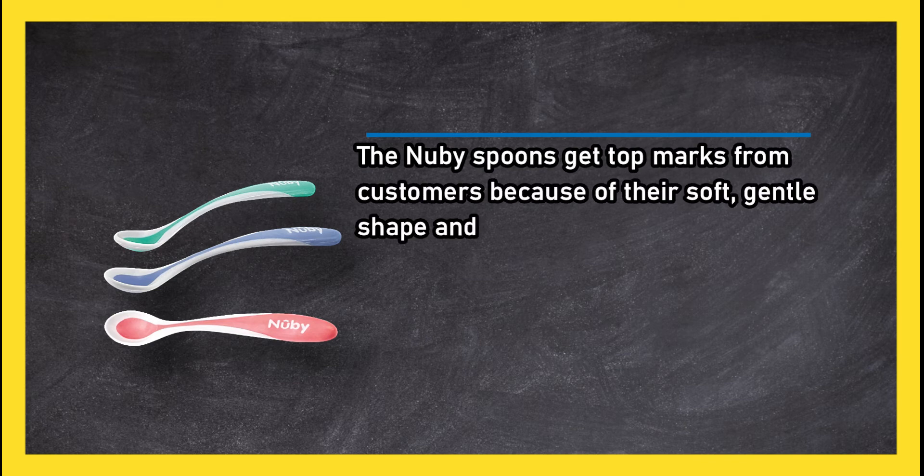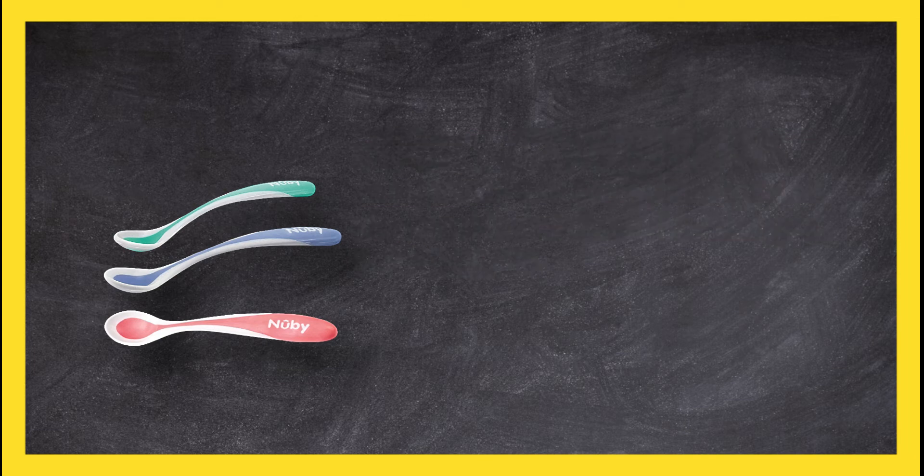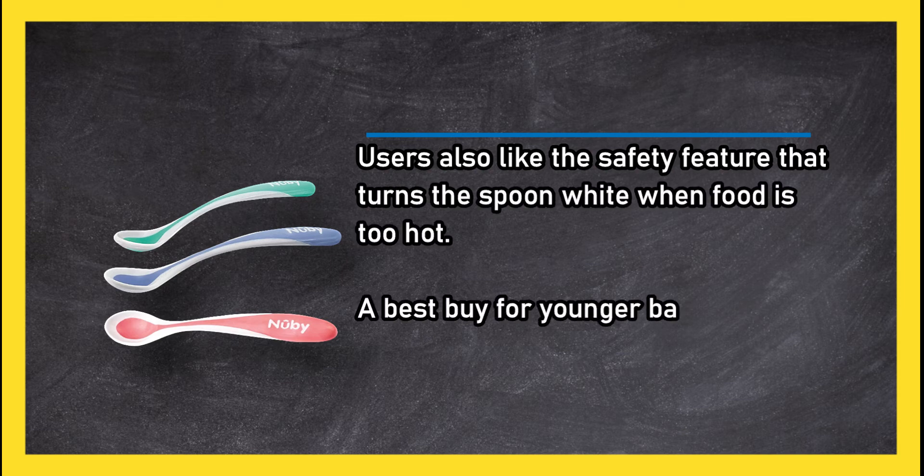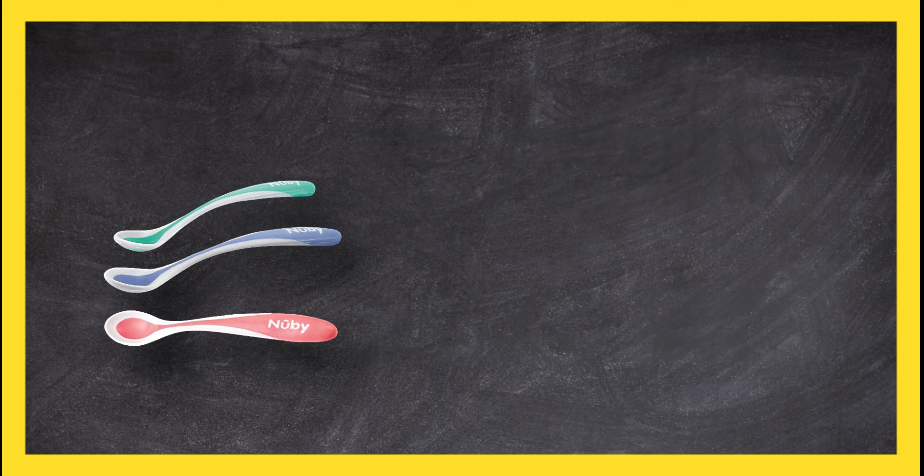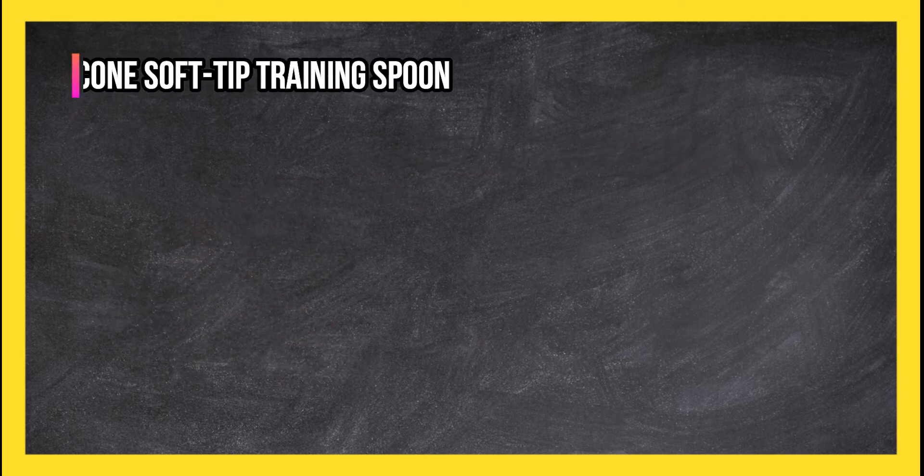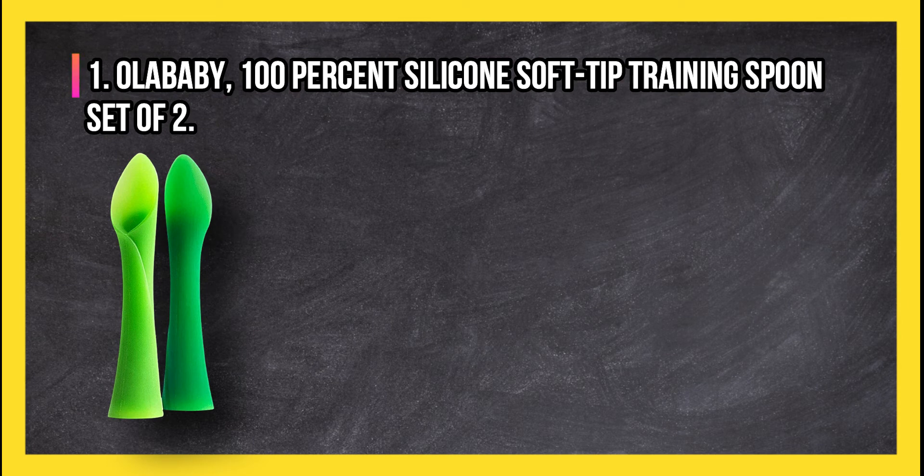Users also like the safety feature that turns the spoon white when food is too hot. A best buy for younger babies that offers a good value for the cost. Tends to stain especially with darker baby foods.